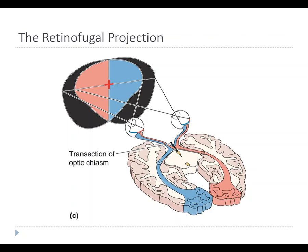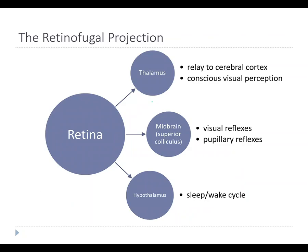A very rare injury in which just the optic chiasm is cut would cause what's called tunnel vision. You would lose the nasal axons from both eyes, which means those peripheral monocular visual fields would be gone. All you'd be left with is the central visual field — you would still have depth perception, but the peripheral areas would be blind. You would only be able to see in the center of your visual field.